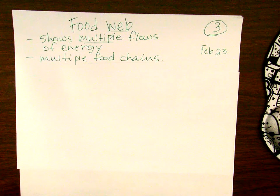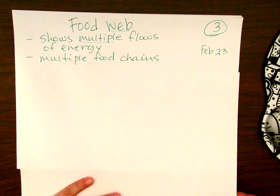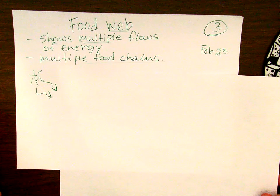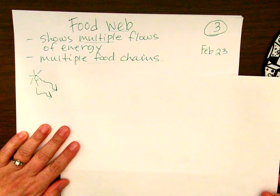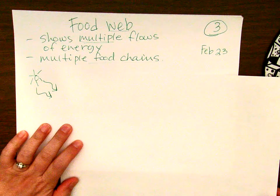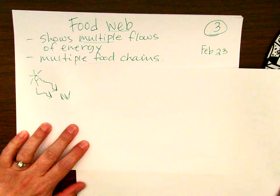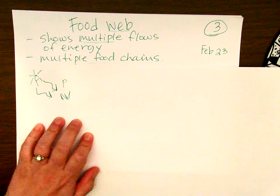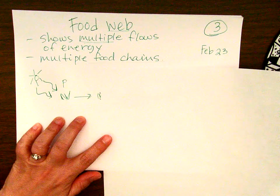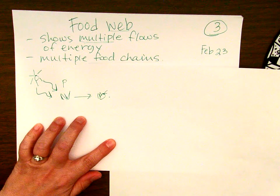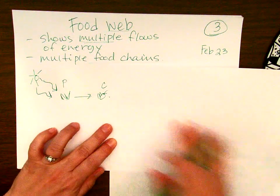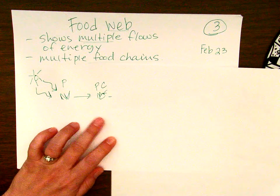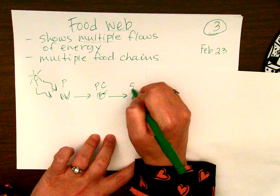We'll use the food chain we started with in the previous video. We have our Sun, which gives off a lot of energy, but it's not energy that can be used by us directly in the ecosystem. So we need something to convert it into something useful, which is our grass — our producer. That energy gets absorbed by the grasshopper, which is a consumer and the first one in this chain, so it's a primary consumer. Then we have the bird that eats the grasshopper, so it's a secondary consumer.